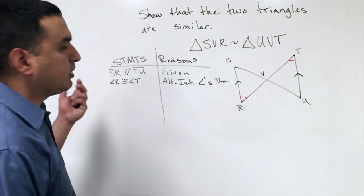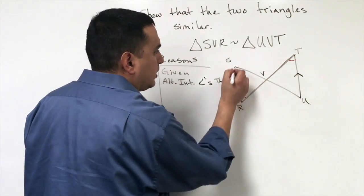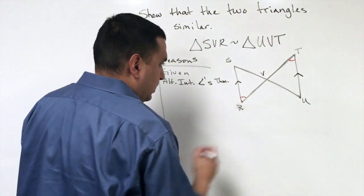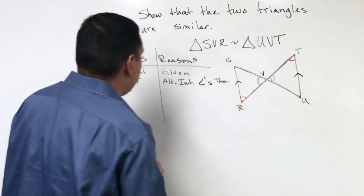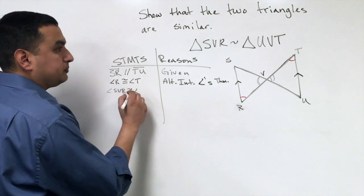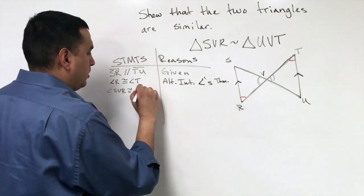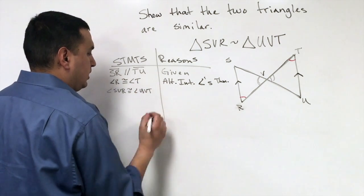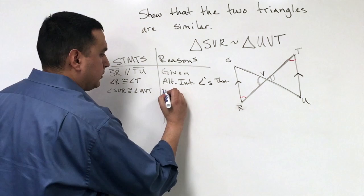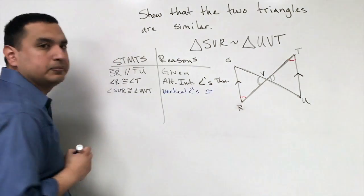Now, the other pair that we always name, because remember we have to have two pairs to use the angle angle similarity, is I have this segment right here, RT intersecting this segment SU. Anytime we have that, remember that we always have vertical angles. So I would say angle SVR is congruent to angle UVT. And we would call that the vertical angles are congruent theorem.